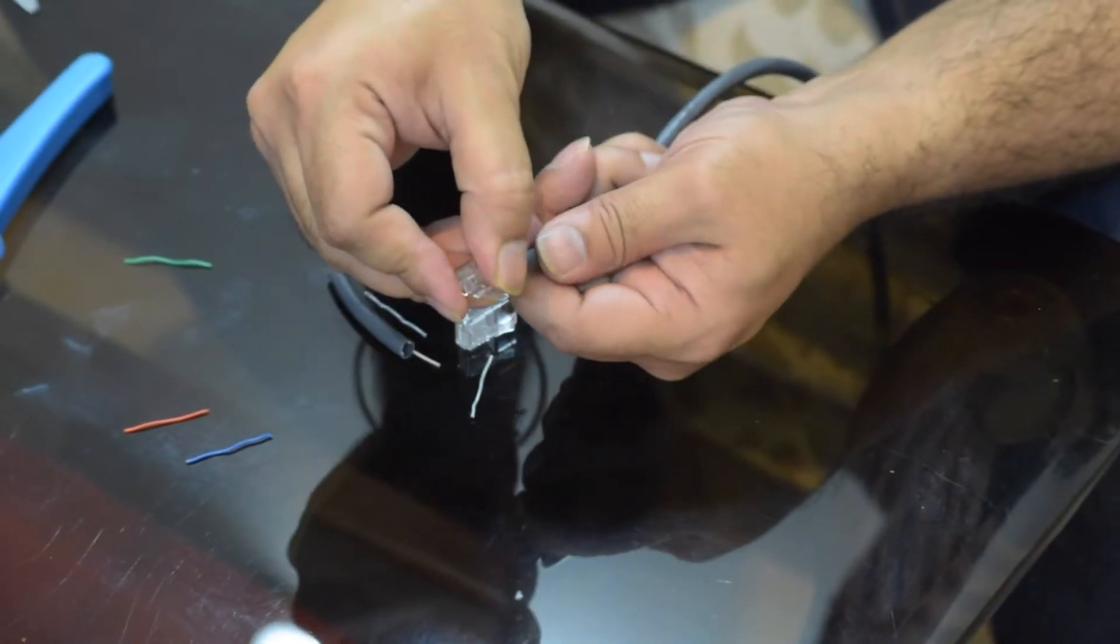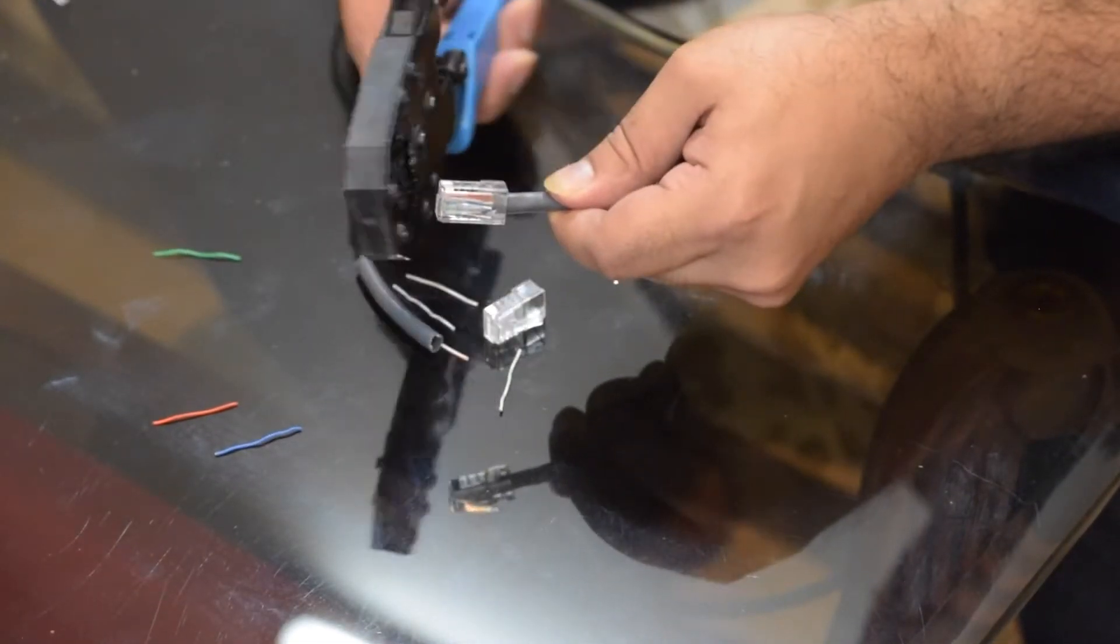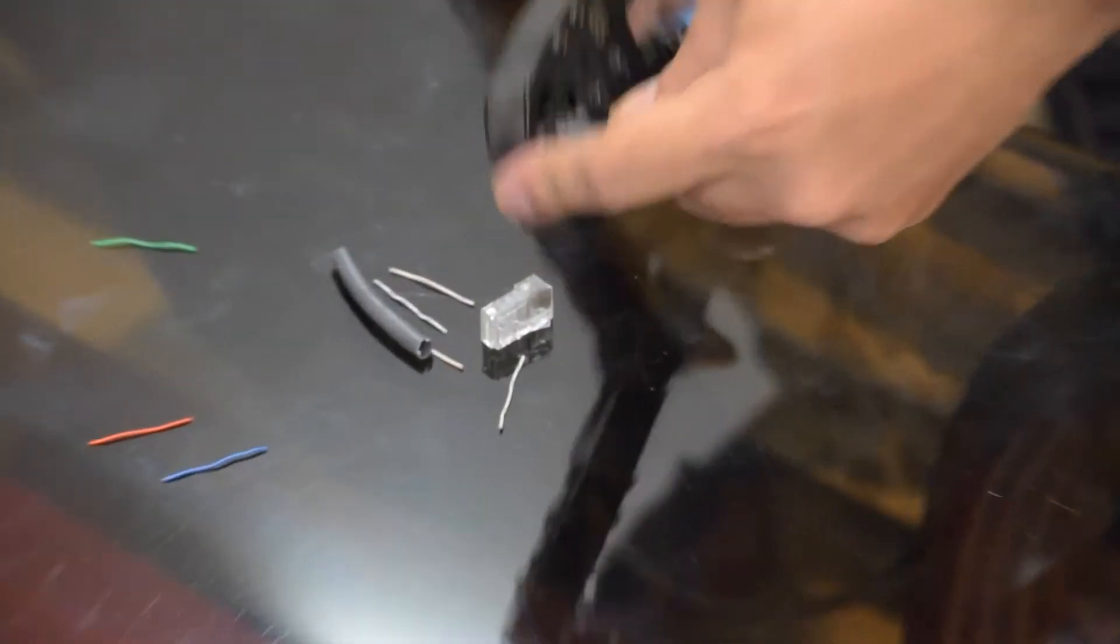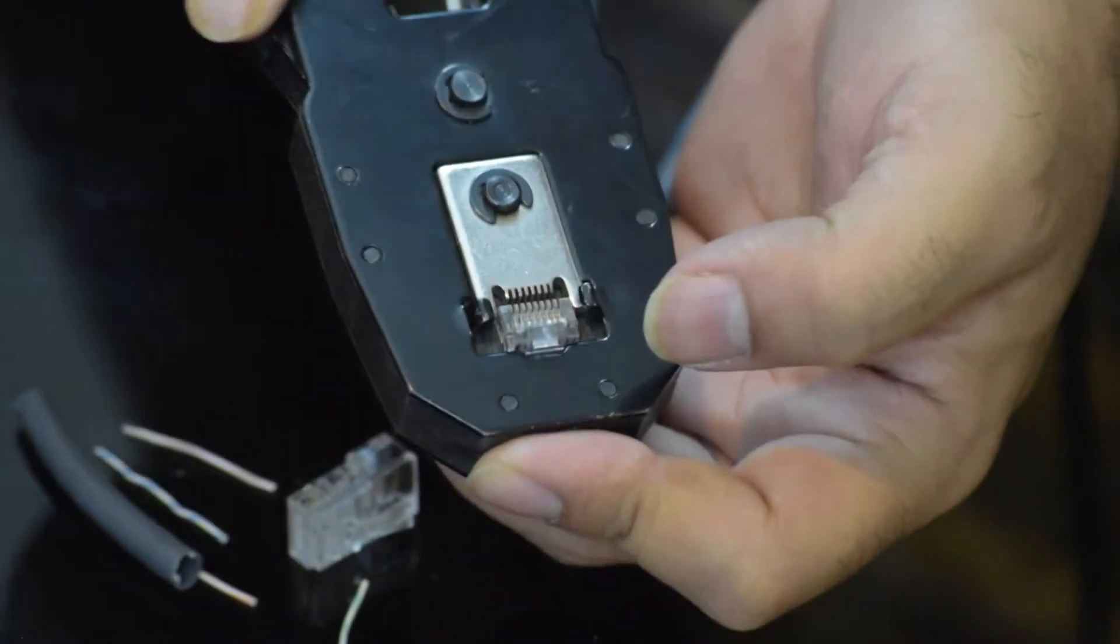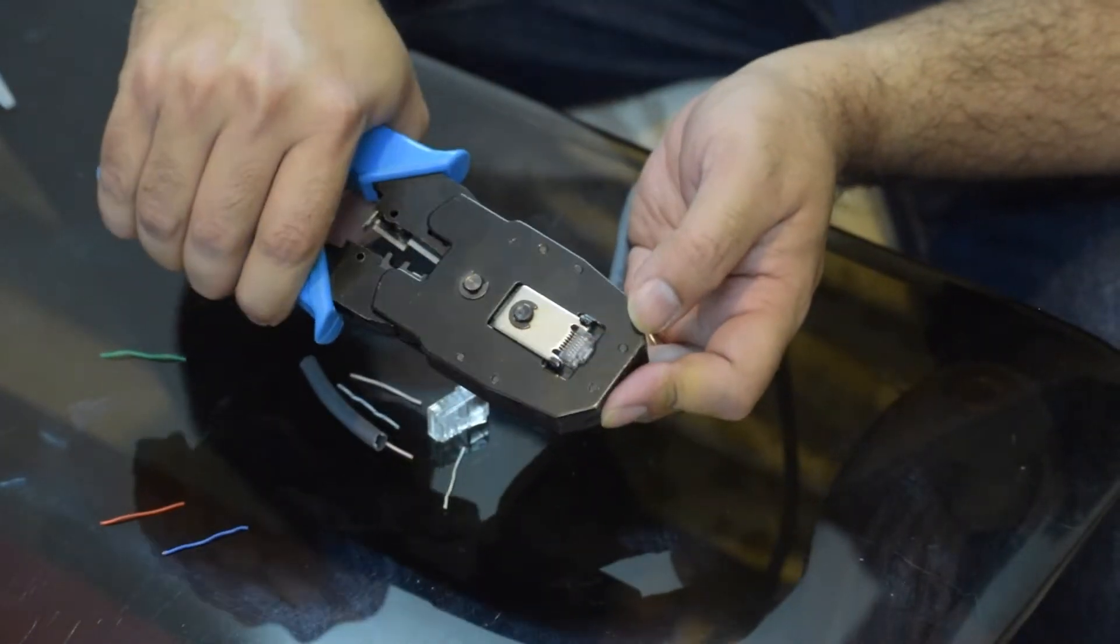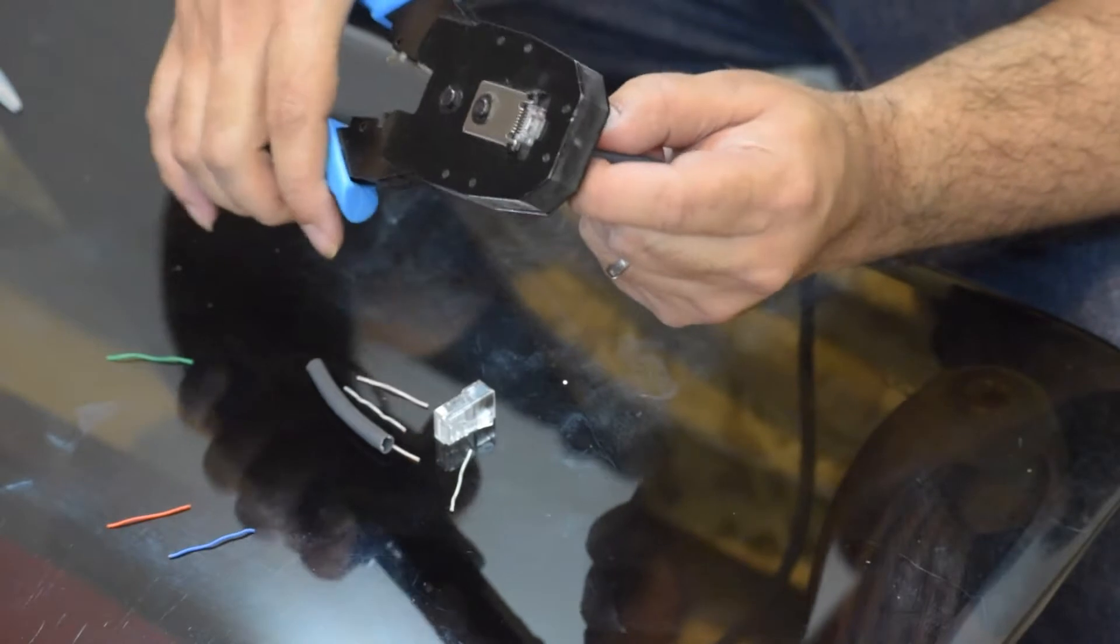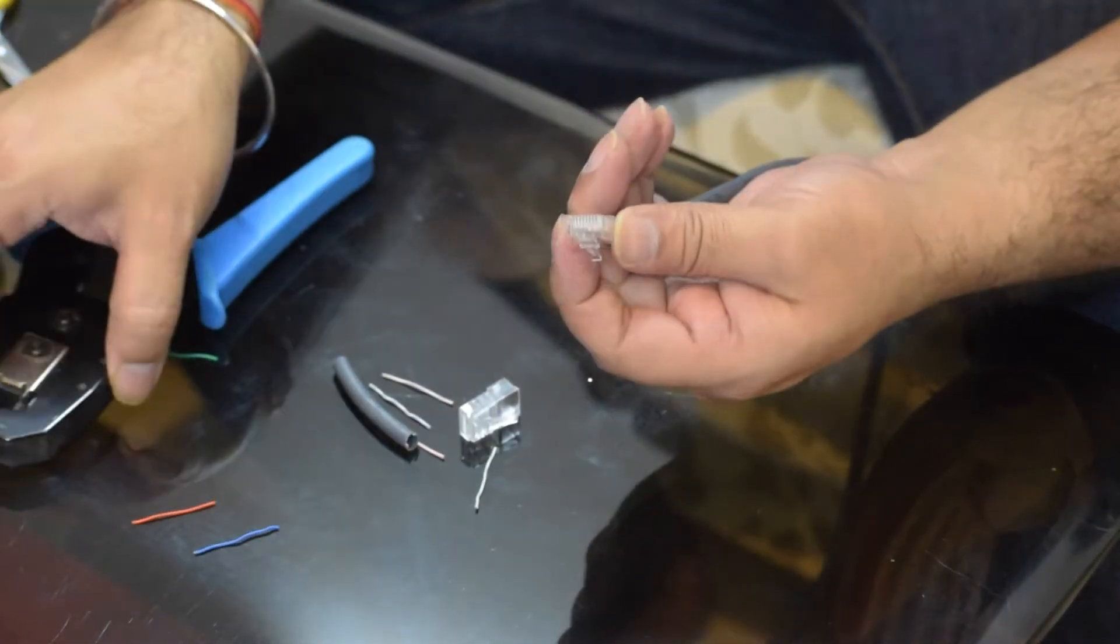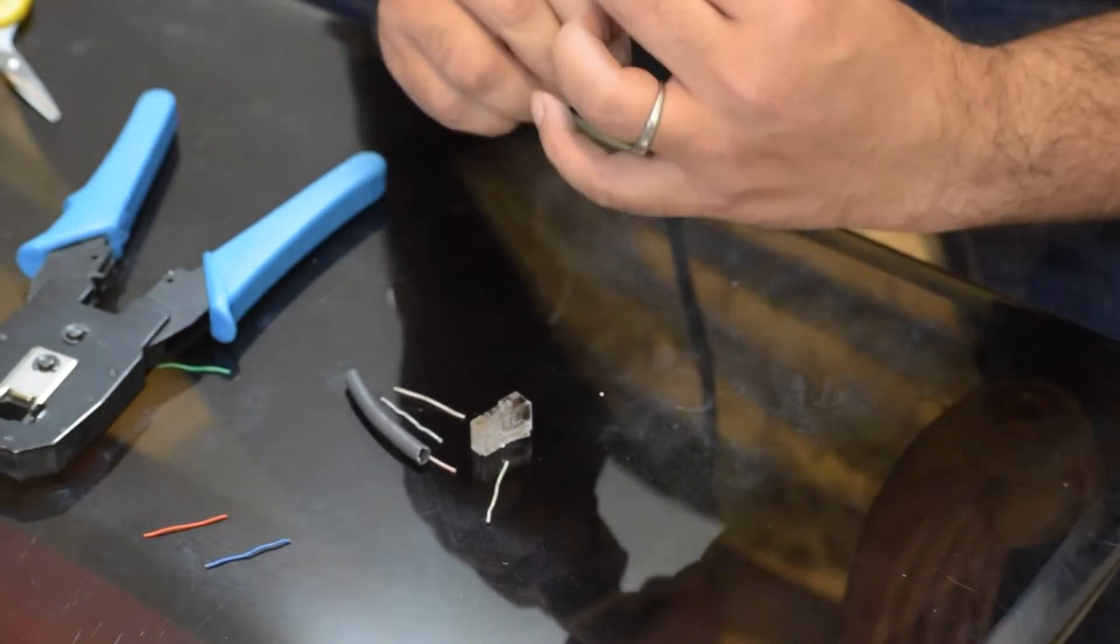Now, once I've got this, I'm going to just insert it gently into the crimp tool. You can only insert it one way. So just insert it like this. And as you can see the teeth of the crimping tool would line up with the pins. You want to press down firmly on this once. You might want to do this once or twice. And then you can gently try and pull the connector out. And you can see that the cables are all properly lined up.